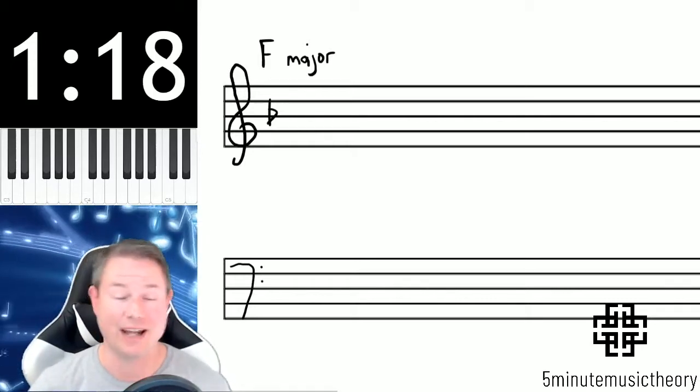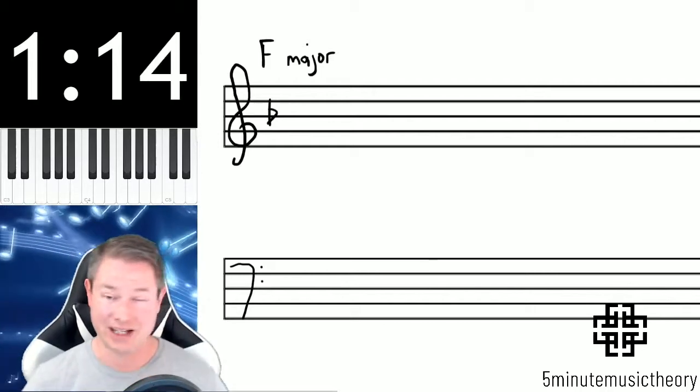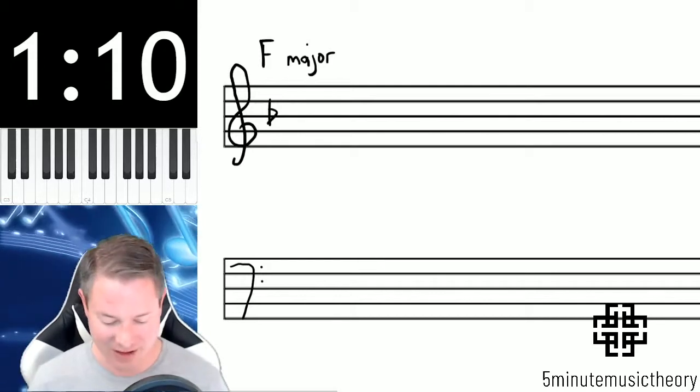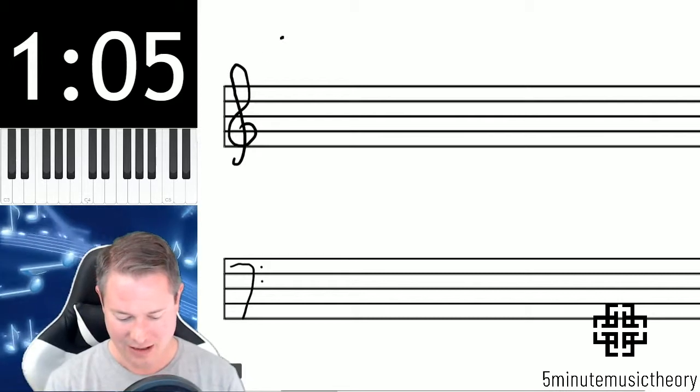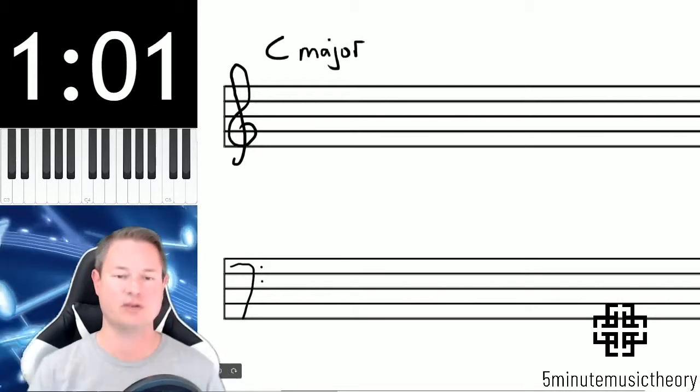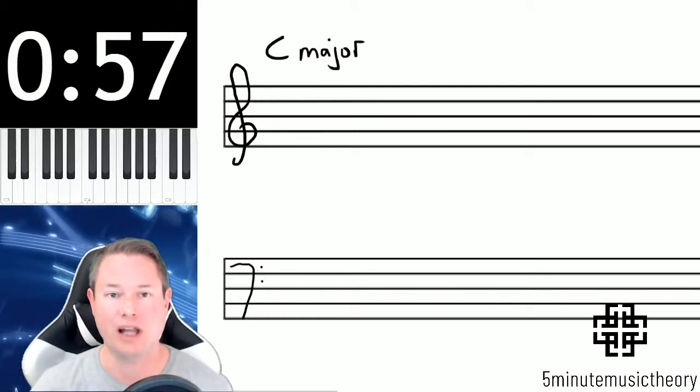F major is the key that has one flat, and if you know your circle of fifths, then you know that because it's the one that's one step directly to the left counterclockwise of C at the top. Speaking of C at the top of that circle of fifths, it's the other key for which there is no trick, and you just have to remember it because there are no sharps and no flats in C major. It's our blank key.